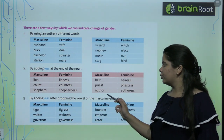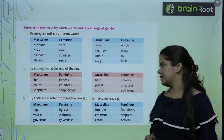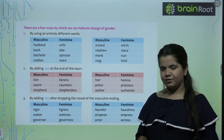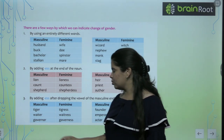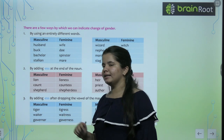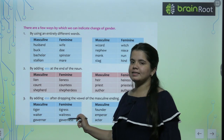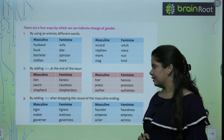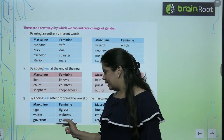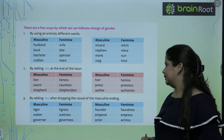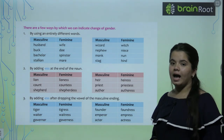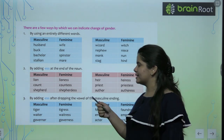By adding -ess after dropping the vowel of the masculine ending. For example, tiger hai — toh aap isko kaisa change karenge feminine mein? Tigress banane ke liye — aap yeh jo last vowel hai, usse hata ke -ess add karte hai, toh spelling mein difference aata hai: tigress. Waiter, waitress. Governor, governess — hum ne 'o' hata diya aur -ness directly add kar diya. Founder, foundress. Emperor, empress. Actor, actress. I hope this is clear.